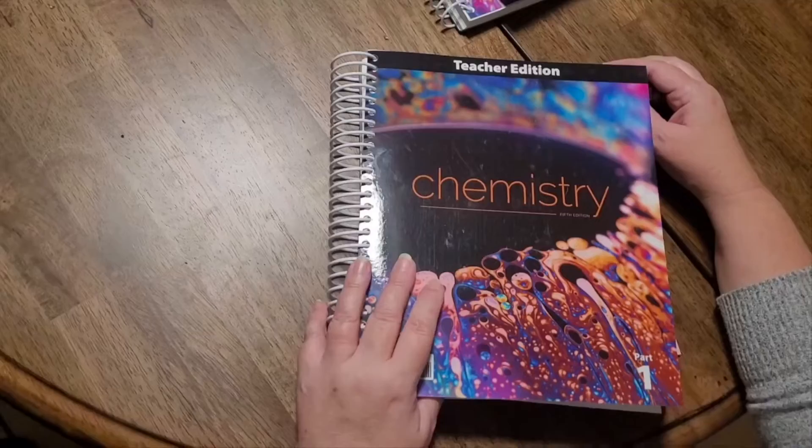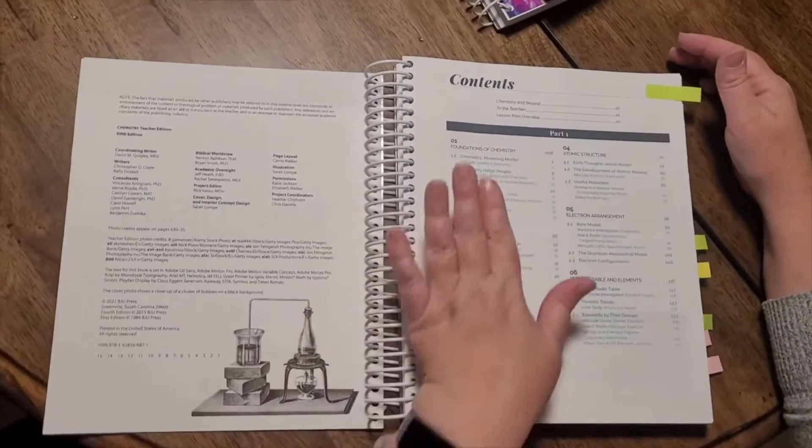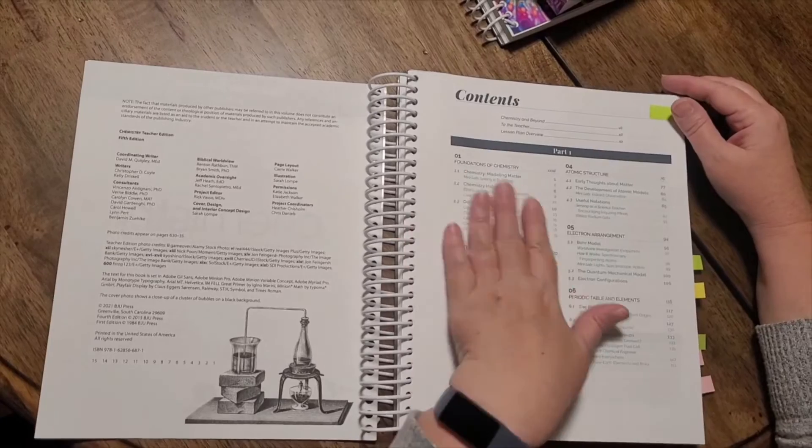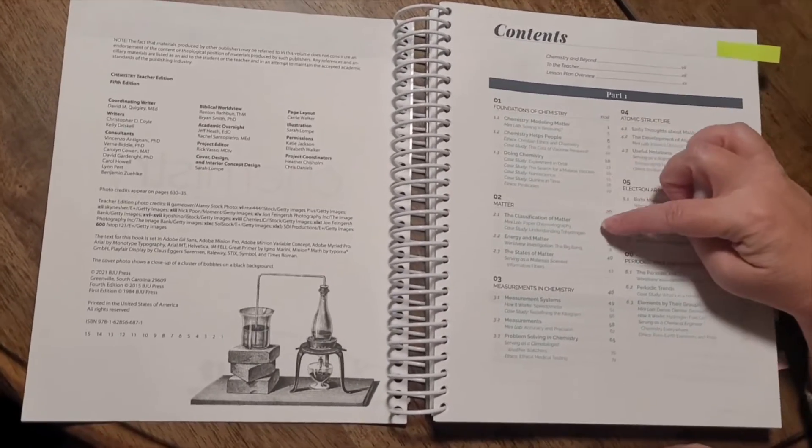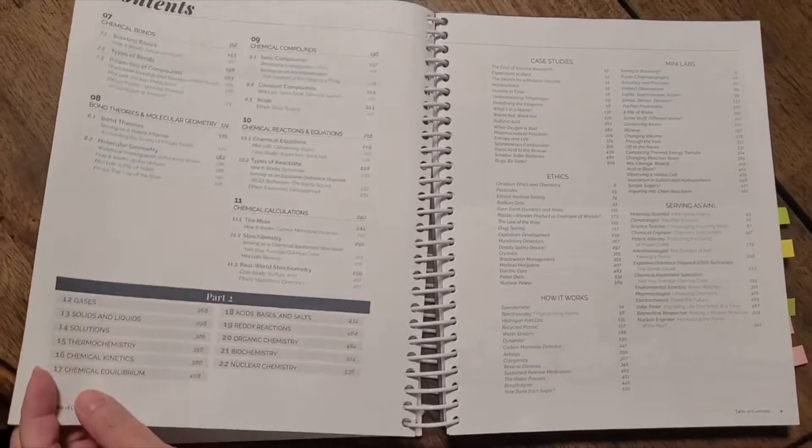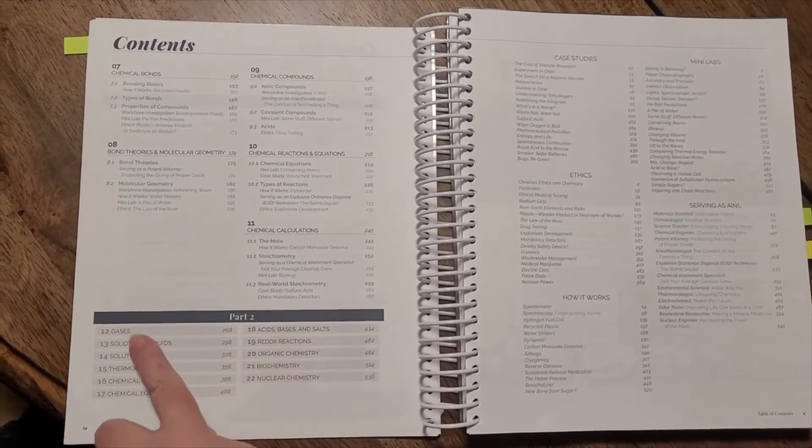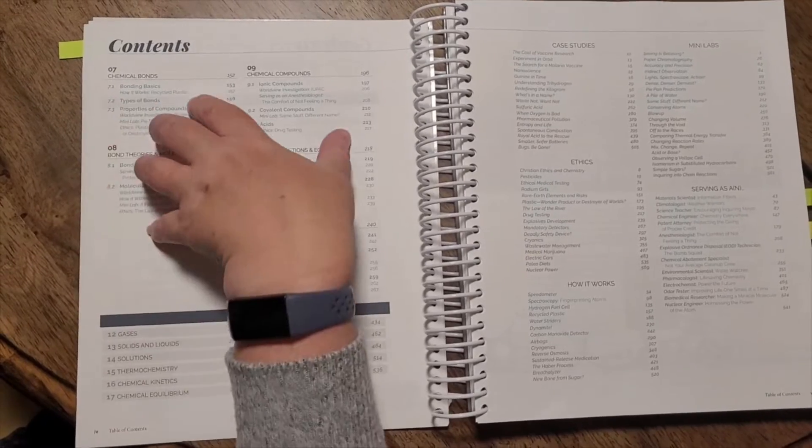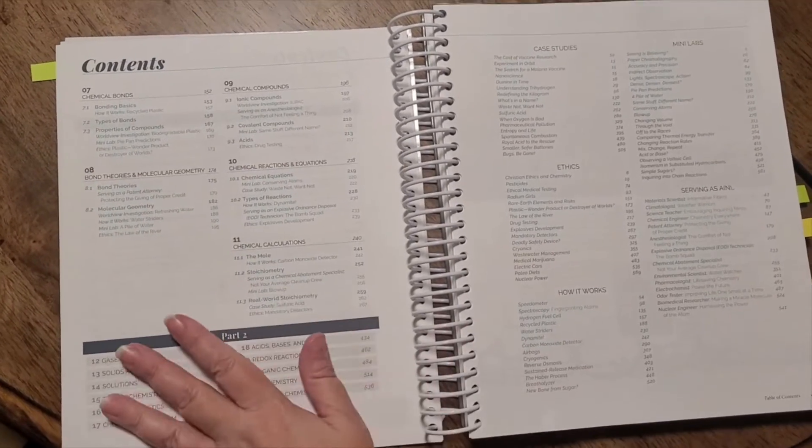Let's start with the teacher's edition. There are two books for this one. We are just going to look at the first book but they are laid out very similar. To start, we're going to look at the table of contents and you'll notice that it breaks each chapter into different sections. On part two you'll see that it's listed here. It will have the same thing in the second book for part two.